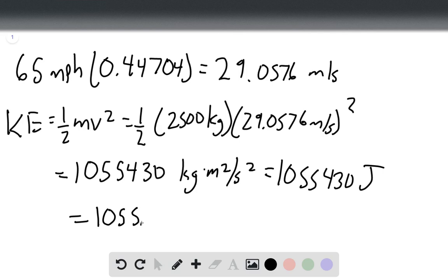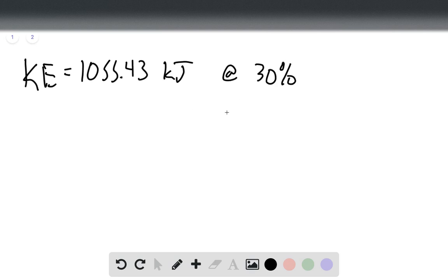So now we have our kinetic energy in kilojoules, and now we're told that this kinetic energy comes from thirty percent efficiency. So this is at thirty percent and we want to find what it is at one hundred percent.